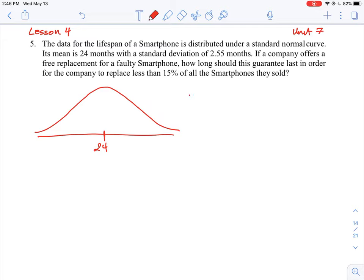So we can just write that here on the side. I will do mu for the mean here is 24, sigma for the standard deviation is 2.55. Now what we also have to know is that we want the company to replace 15% of all the area of the smartphones that they sold. So the probability of replacement is 15%. That's equal to the area under the curve.